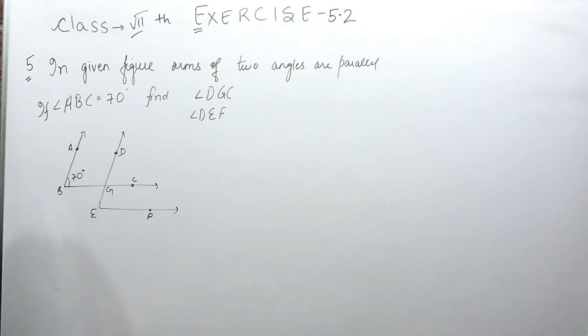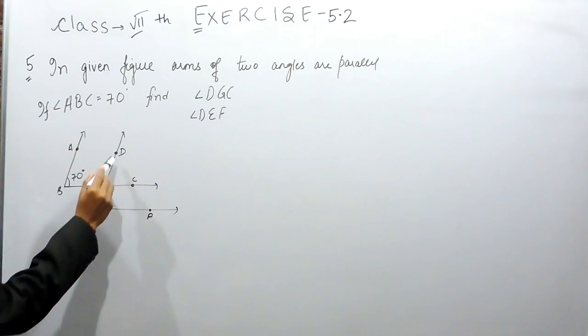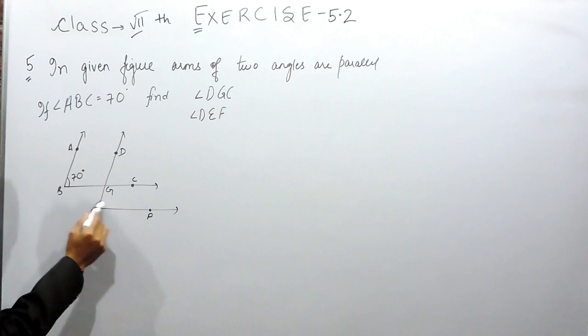Angle ABC is equal to 70 degrees. We have to find angle DGC and angle DEF.